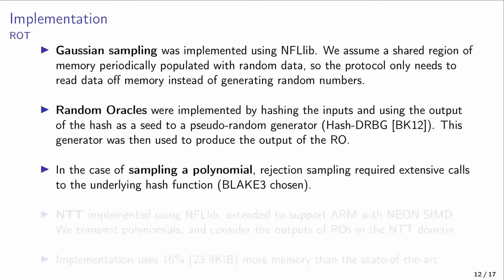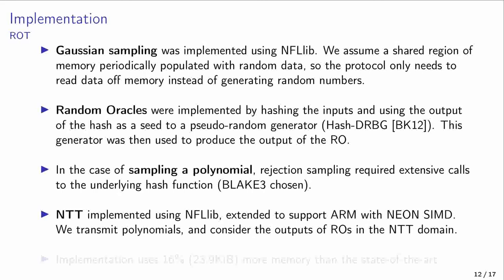For sampling polynomials, rejection sampling required extensive calls to the underlying hash function. We chose Blake-3 as it is one of the most efficient cryptographic hash functions to date. The NTT was also implemented using an FL-lib, but it needed to be extended to support ARM with Neon SIMD. We also considered polynomials that were transmitted and considered the outputs of the random oracles to be already in the NTT domain in order to improve efficiency. Finally, it is important to note that our implementation used 16% more memory than the current state of the art.